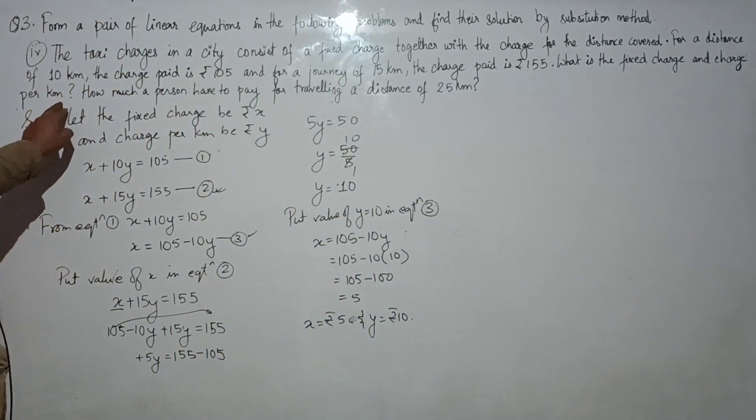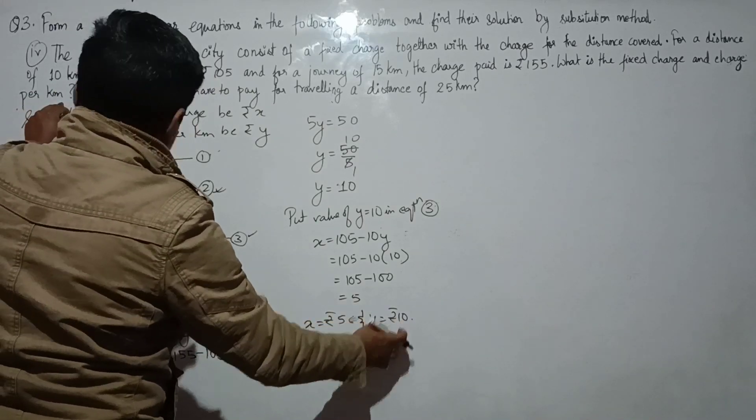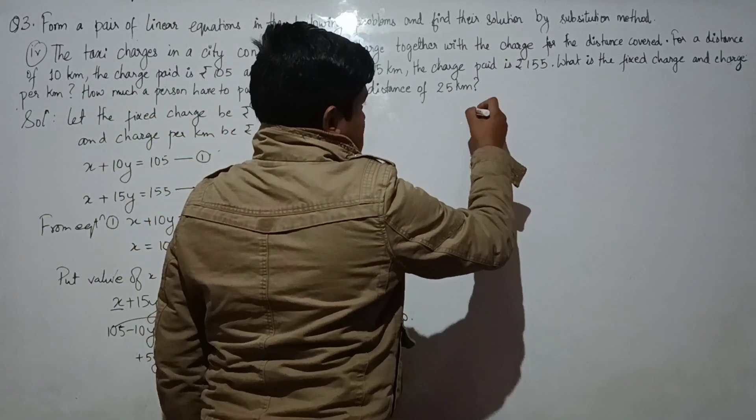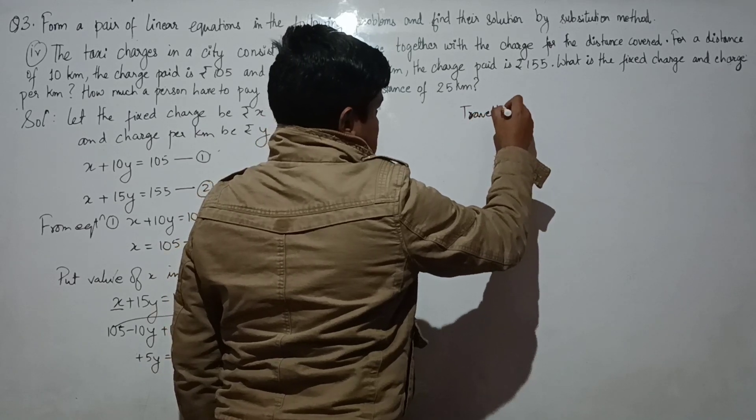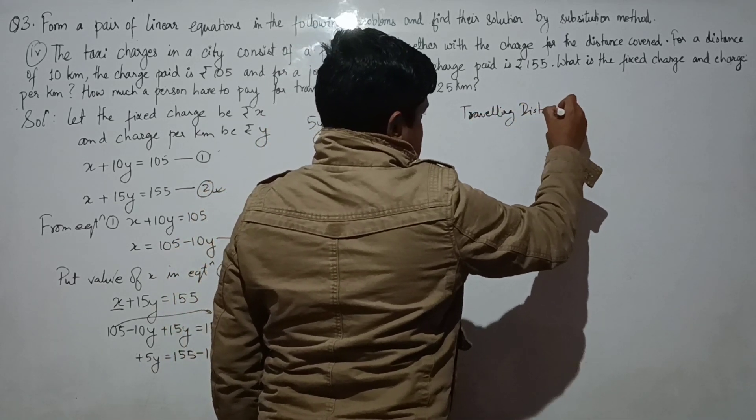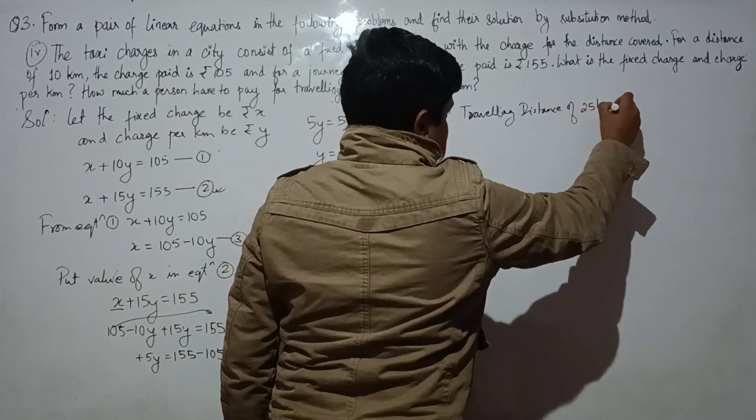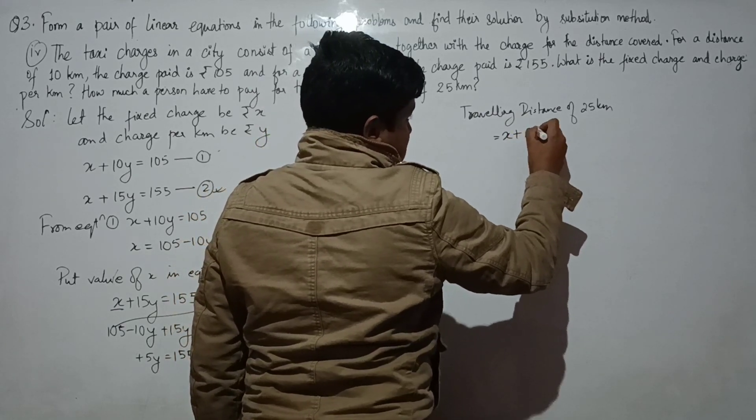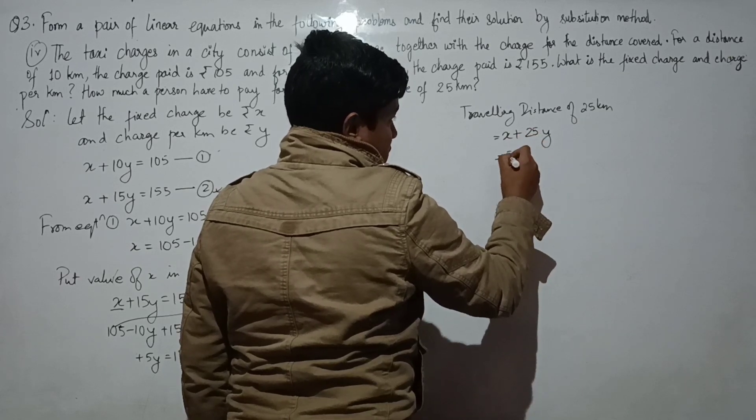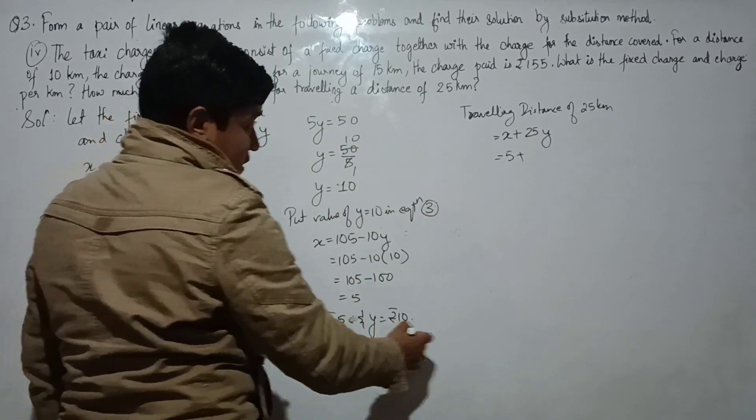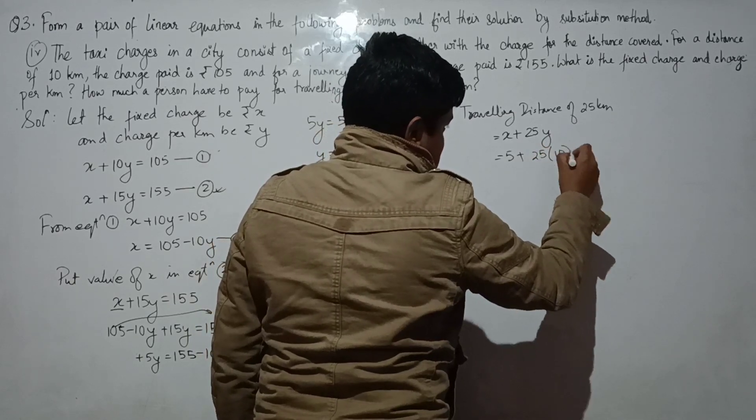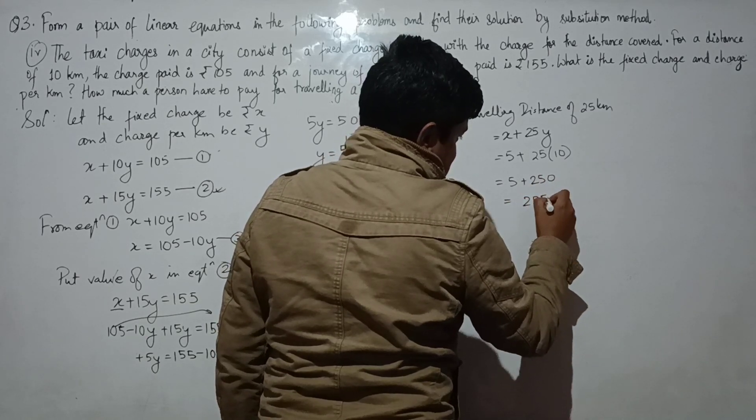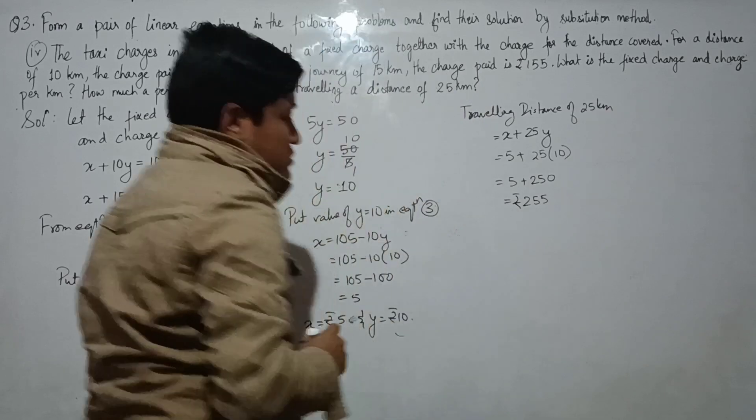The fixed charge is Rs. 5 and charge per kilometer is Rs. 10. How much does a person have to pay for traveling a distance of 25 kilometers? Fixed charge plus 25 into 10, so 5 plus 250 equals to 255. The person traveling 25 kilometers has to pay Rs. 255.